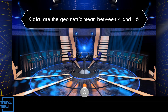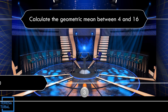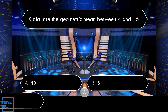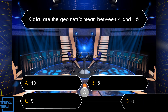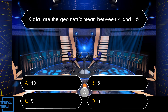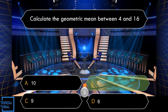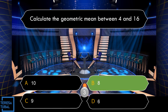Question number 3: Calculate the geometric mean between 4 and 16. A: 10. B: 8. C: 9. D: 6. Correct! The answer is letter B, that is equal to 8.